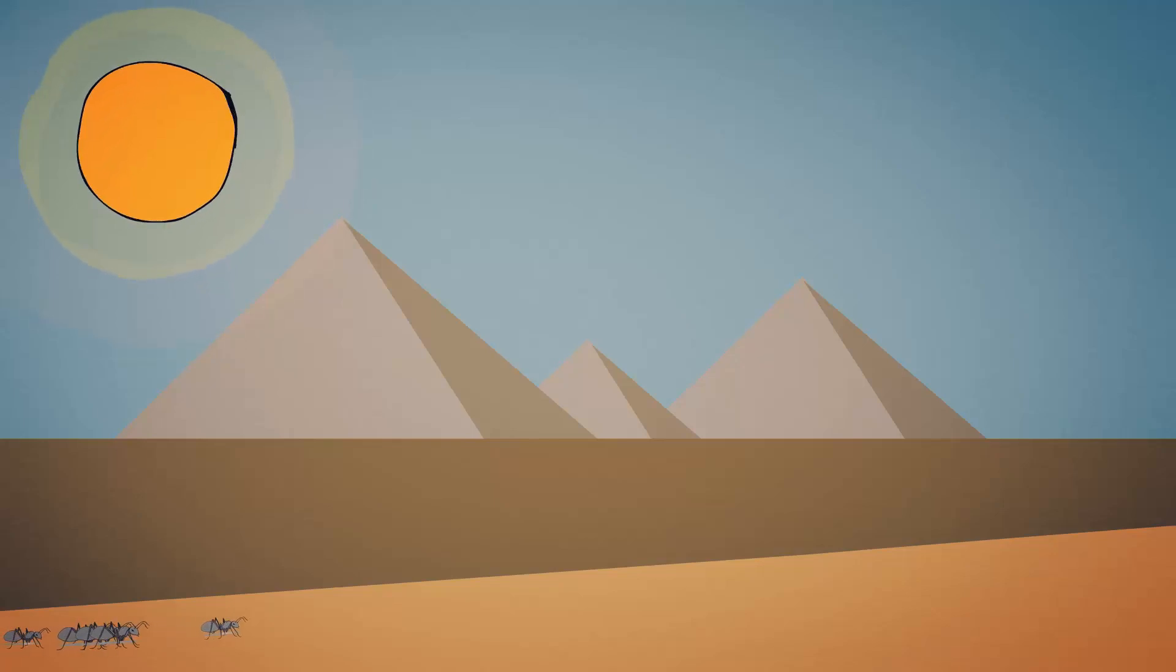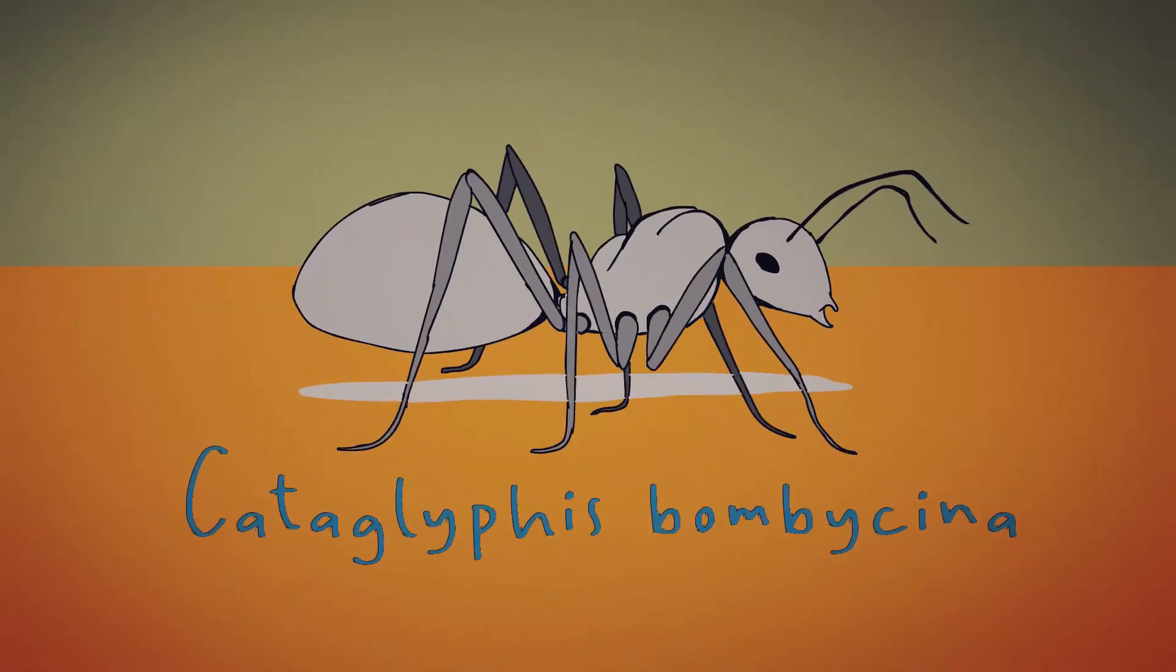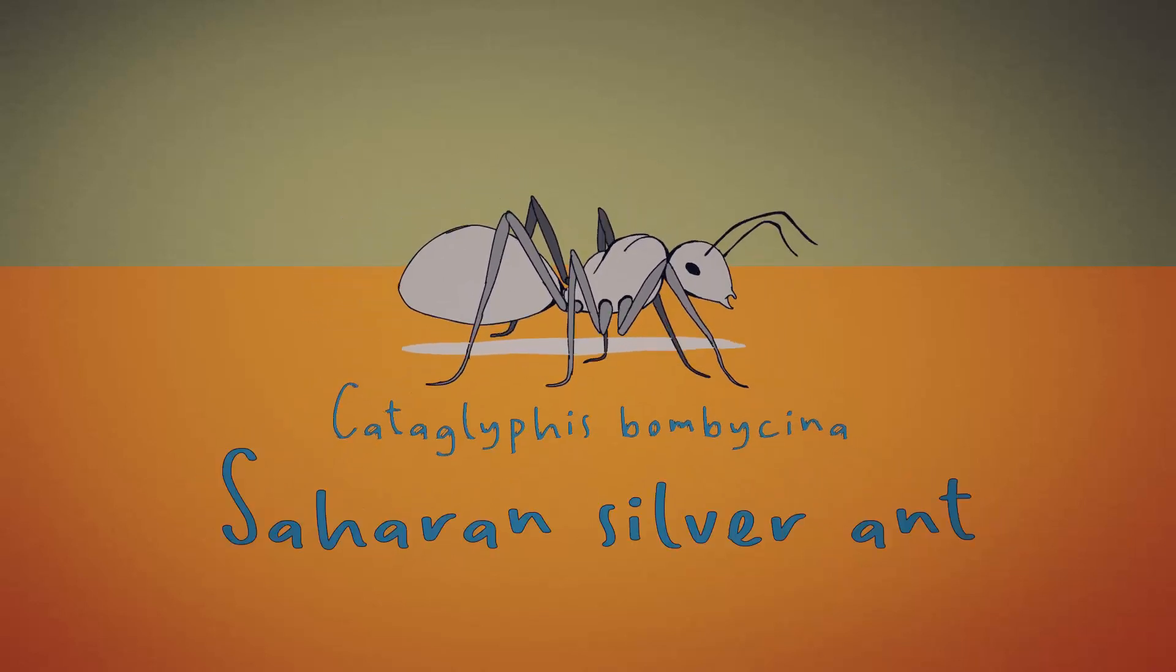Under the hot, steamy sun of the Sahara Desert lives one species of ant that will amaze you. The Cataglyphus bombicina, also known as the Saharan silver ant,